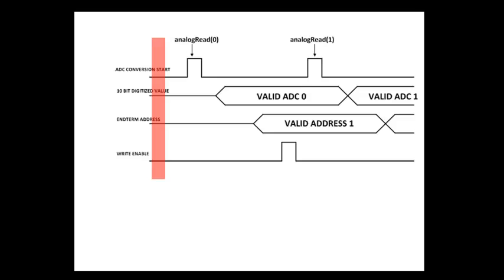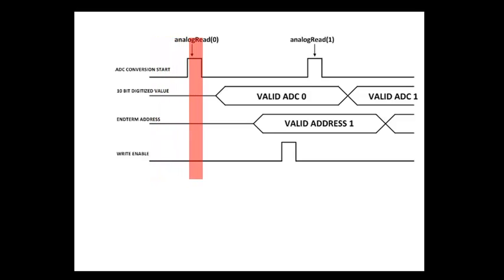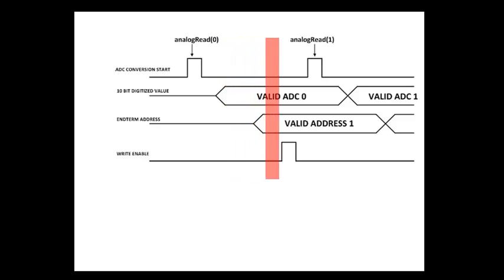Let's cover the timing very quickly. What is happening in the code — you can see the timelines: the ADC conversion, 10-bit digitized value, the end term address, and the write enable. When the analog read function is called, the ADC conversion will start and read whatever is on channel 0. Then shortly after, the bottom 8 bits value is put onto port D, and next the address and bits 8 and 9 are put onto ports B and D.